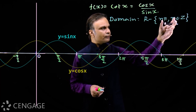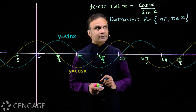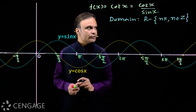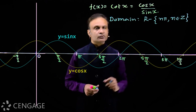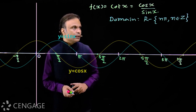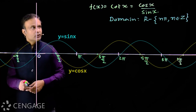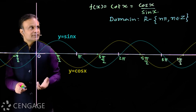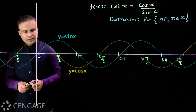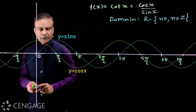This is the set of values of x for which sin(x) is zero. In this function we cannot have sin(x) equal to zero, so we are excluding these values of x. To draw the graph of cot(x), we first draw the graphs of sin(x) and cos(x).